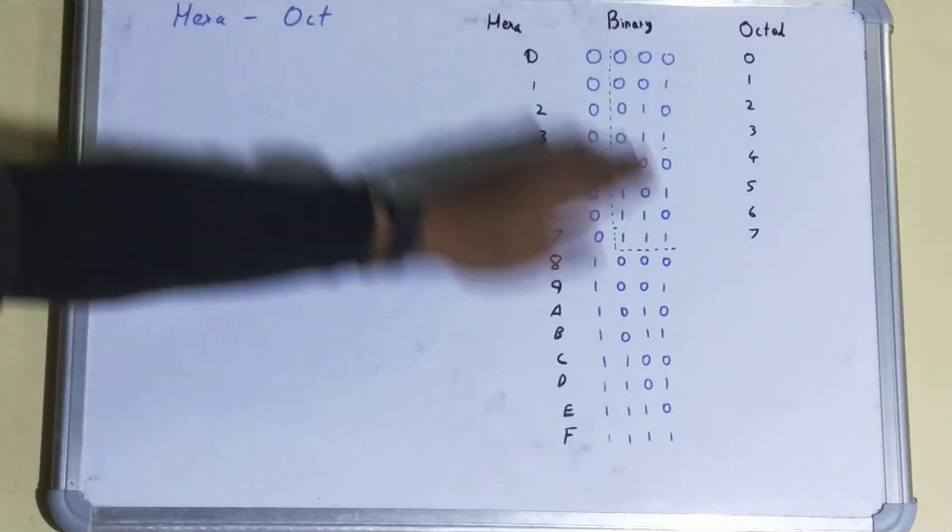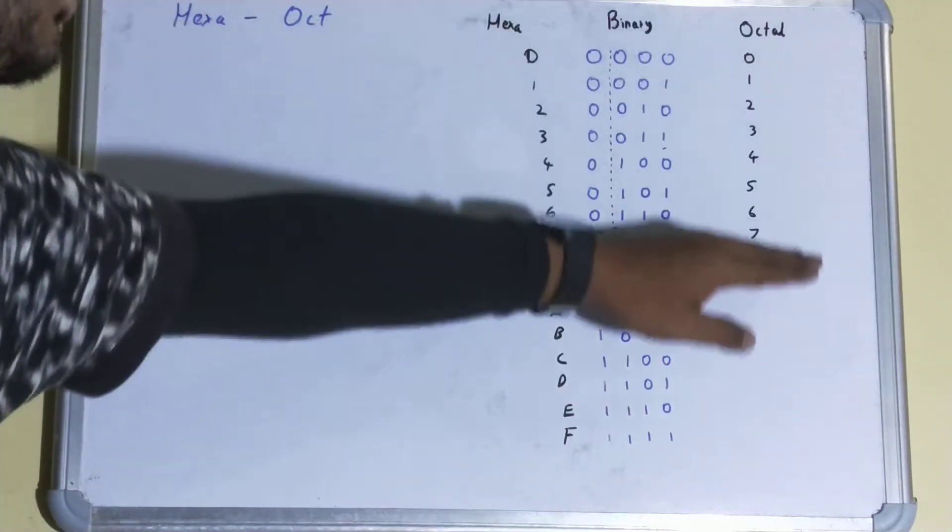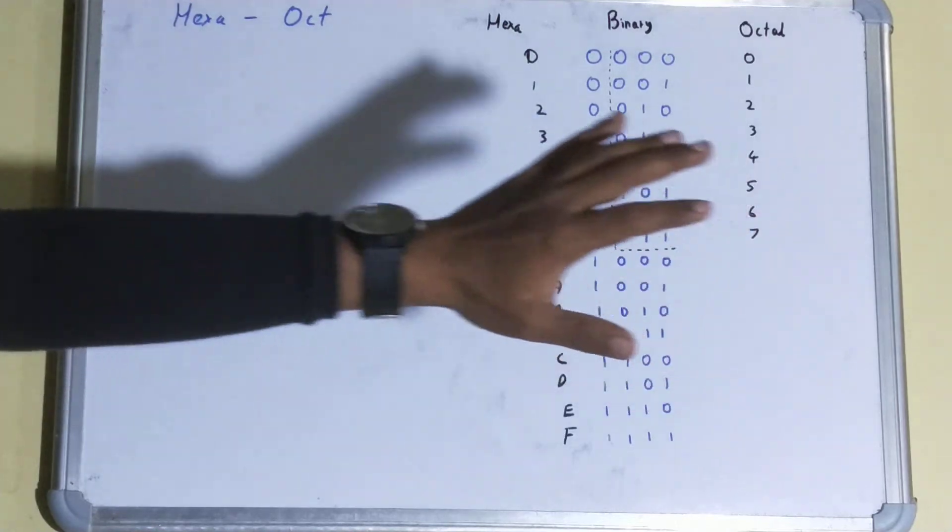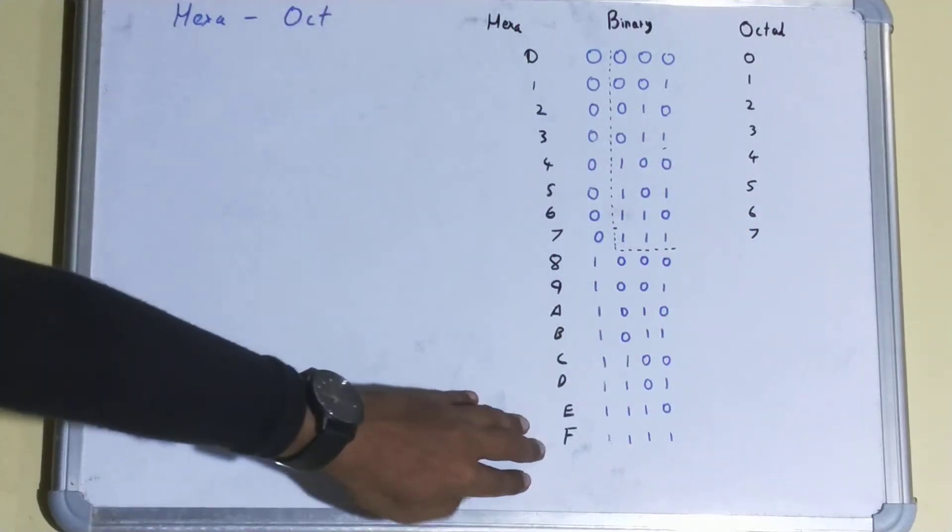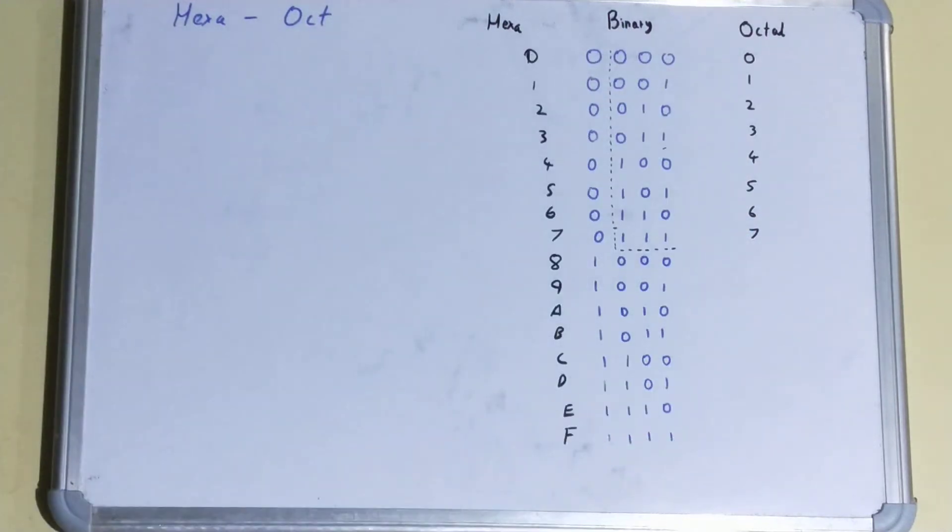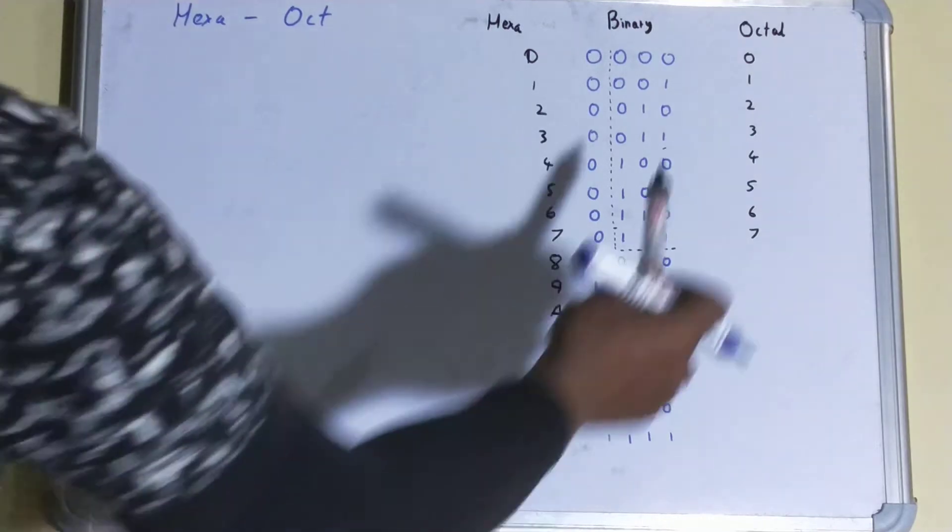In octal you have total eight numbers, in hexadecimal you have total sixteen numbers, and this is your binary values. So what I have done to make this table is I have taken four digit number, four zeros, and then I have just added one and performed that binary addition.